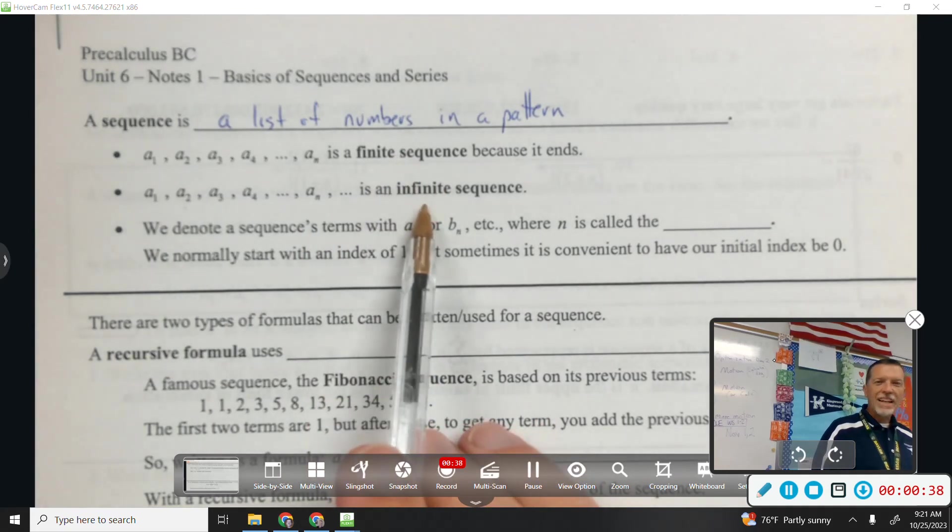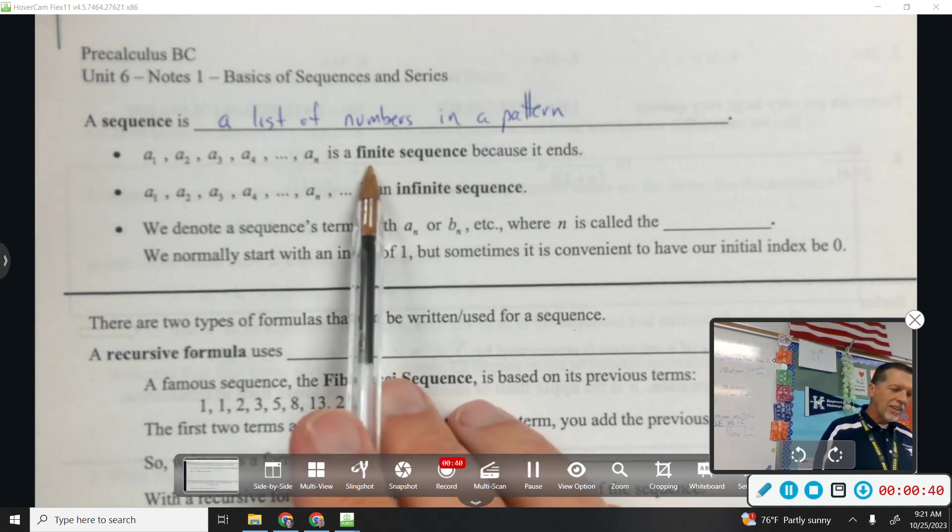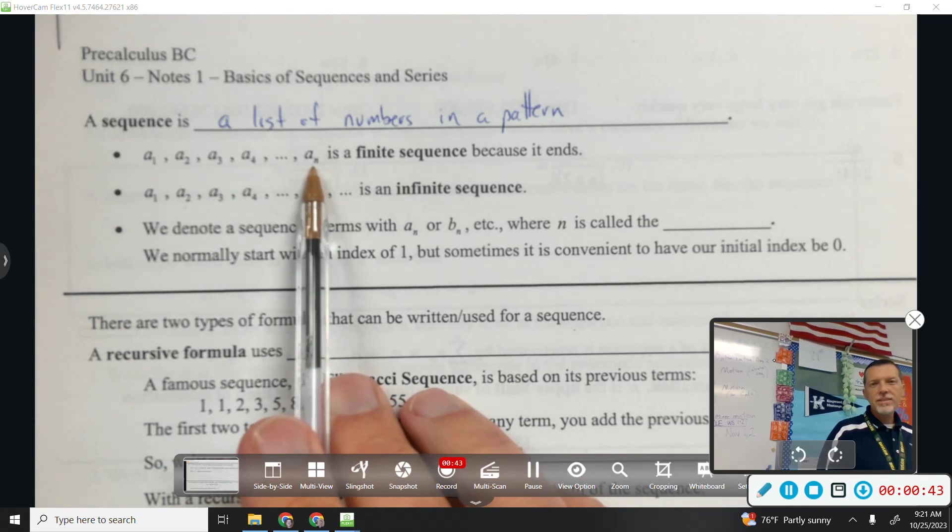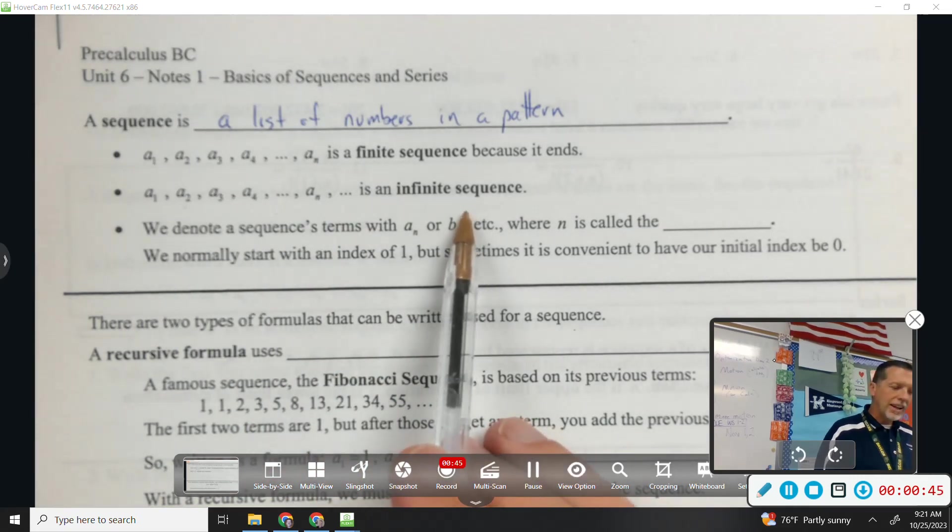Finite versus infinite. A finite sequence would have an ending point. An infinite sequence would not have an ending point.